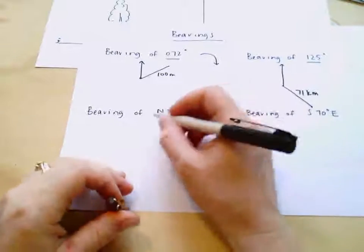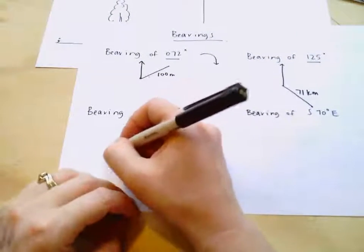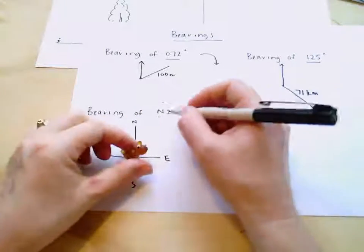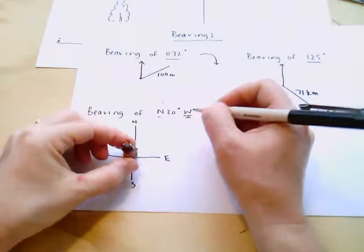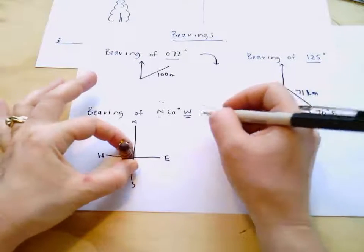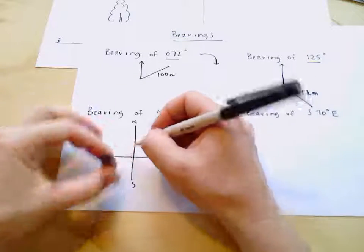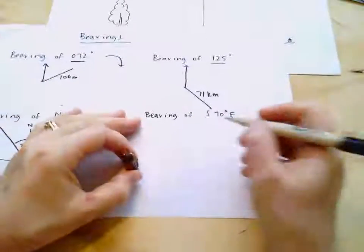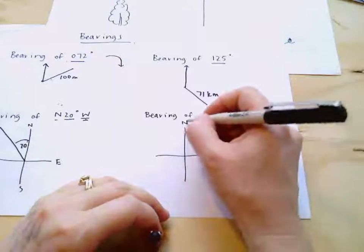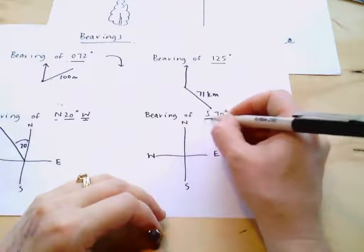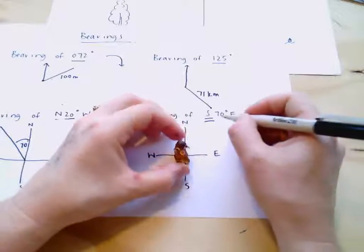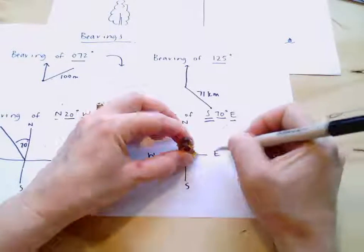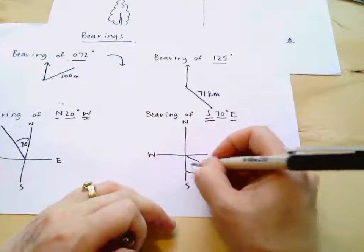Sometimes the bearings are given like this, in which case I have to remember never eat soggy wheat bix going on here. So, I face north and this tells me I'm turning toward the west — I'm facing north and turning toward the west and I'm turning by 20 degrees, so it's about there. This is the direction that I'm going to head. This time I'm facing south and I'm turning 70 degrees to the east, so 70 degrees toward the east — that's the direction that I'm heading there.